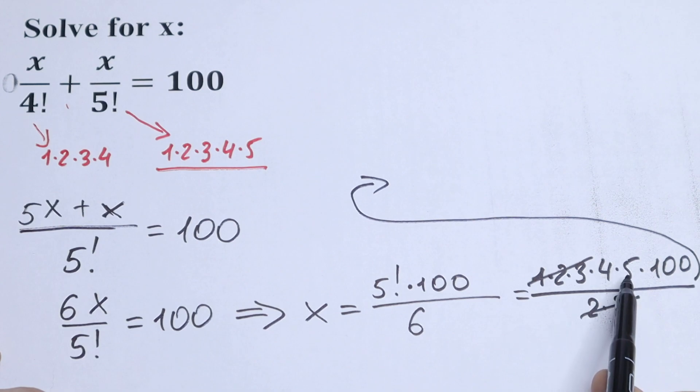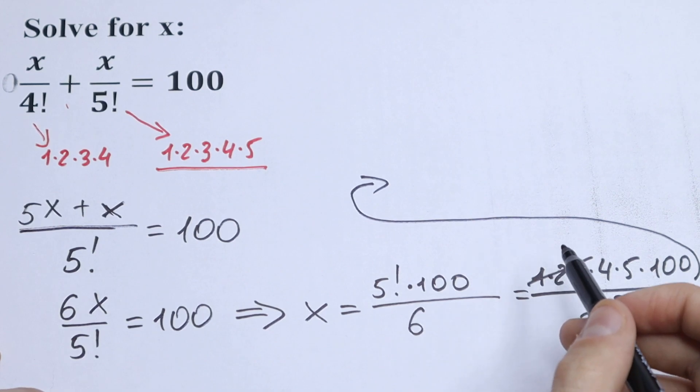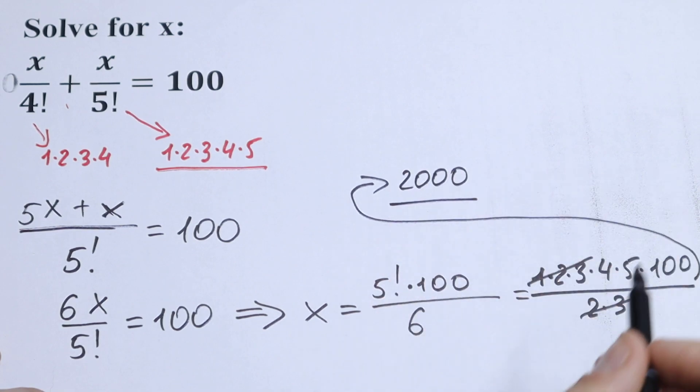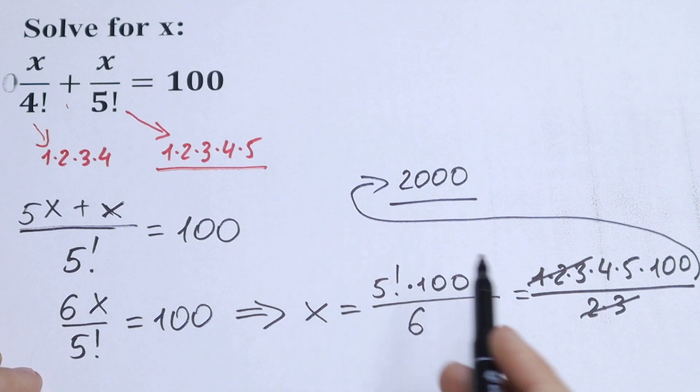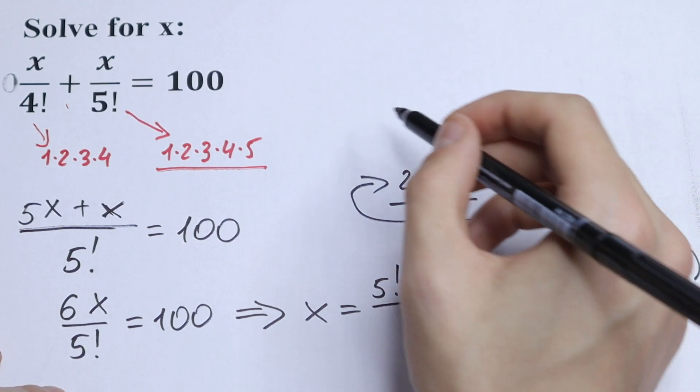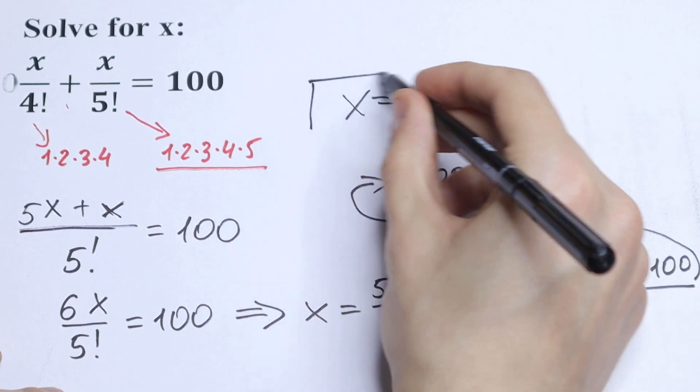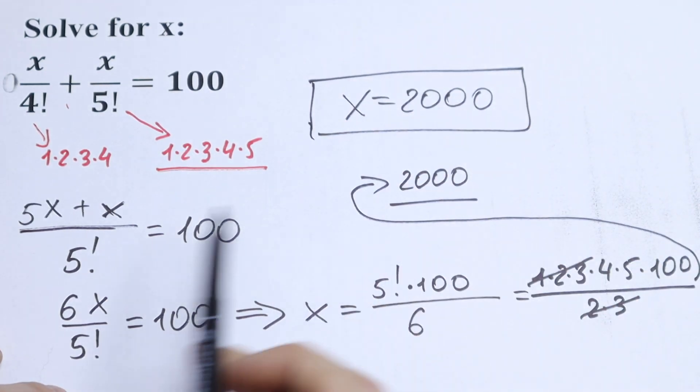What we're going to do next is multiply: 4 times 5 is 20, and 20 times 100 equals 2000. This is our answer. Of course we can check this answer, but x equals 2000 is our answer.